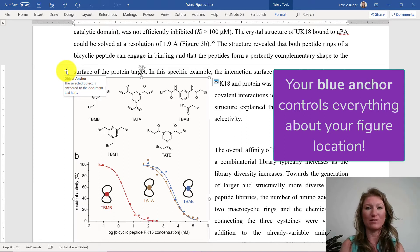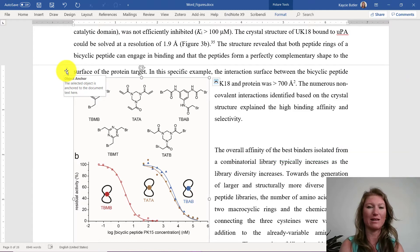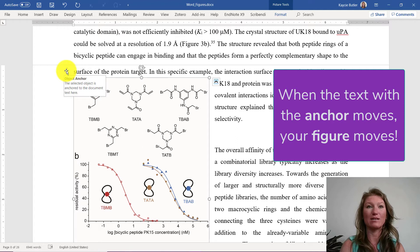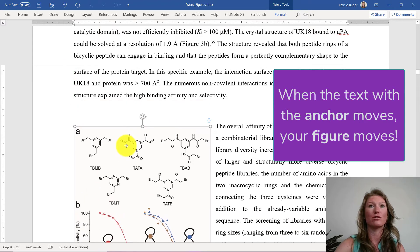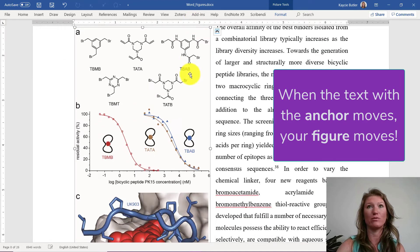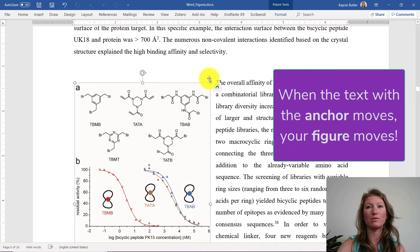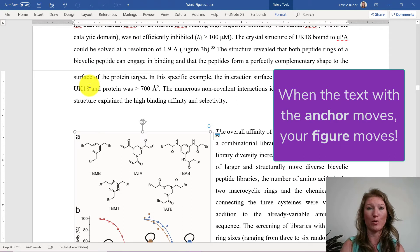And so anytime that piece of text moves, this figure is going to move. And that is a key thing that I think a lot of people don't realize when working with figures in Word is that the figure is stuck to a piece of text. Okay. So that means that if you take this figure and drag it, you're going to move. See how this anchor now moved to this paragraph. So now the text is anchored to this paragraph and not to this paragraph anymore.